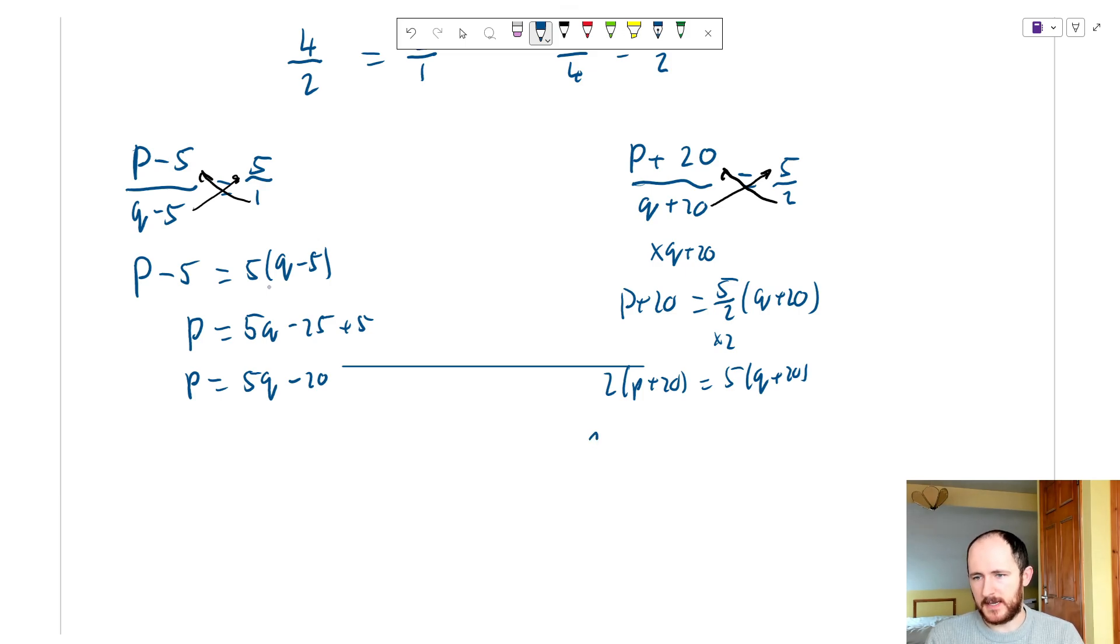I get 2 times 5q minus 20 plus 20 equals 5q plus 20. Of course that minus 20 and plus 20 cancel out. Expand the brackets we get 10q plus 40 equals 5q plus 100. Minus 5q from both sides we get 5q equals 100 which means q is equal to 20. That's the first answer.